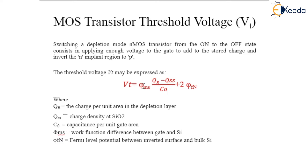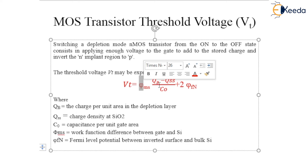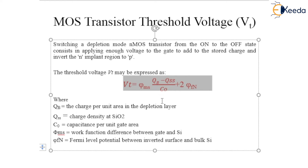The threshold voltage is expressed as: Vt = Φ_MS − (Qb − Qss) / C₀ + 2Φ_Fn, where Φ_MS is the work function difference between gate and source, Qb is the charge per unit area in the depletion region, Qss is the charge density at silicon dioxide, C₀ is the capacitance per unit area, and Φ_Fn is the Fermi level potential between the inverted surface and bulk of the silicon substrate.